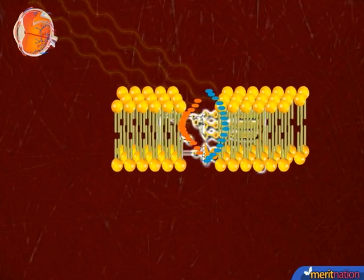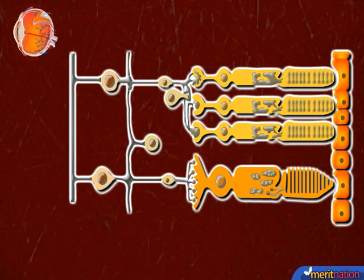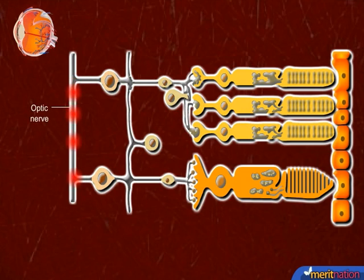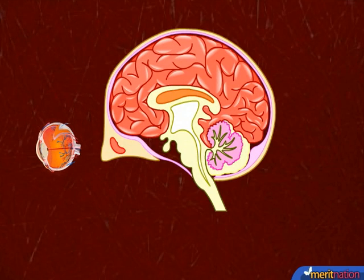Due to this, a potential difference is generated in rods and cones that further generates an action potential which passes through bipolar cells to ganglion cells and then to optic nerves connected to the visual cortex area of the brain.